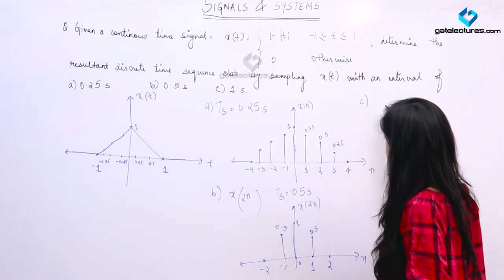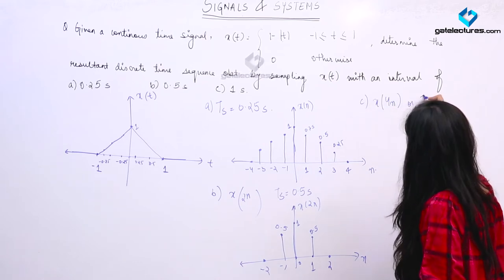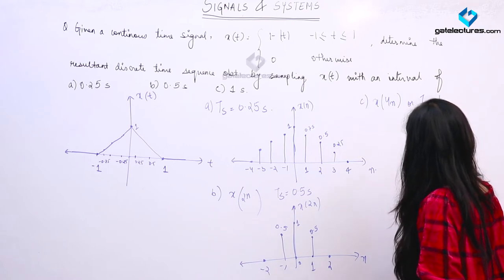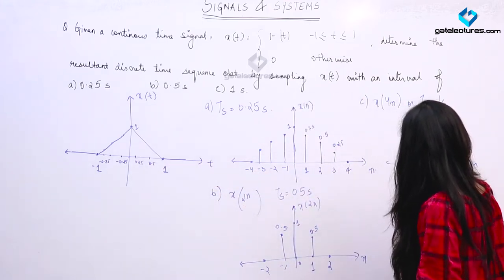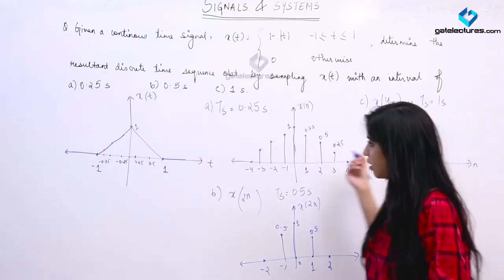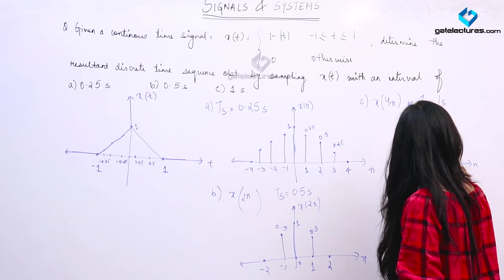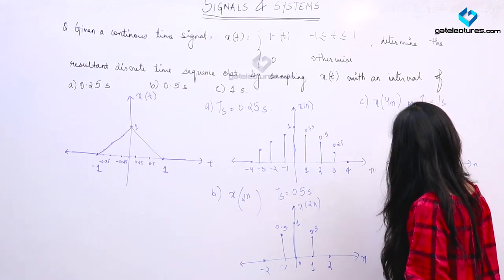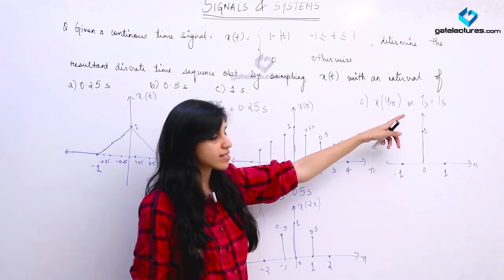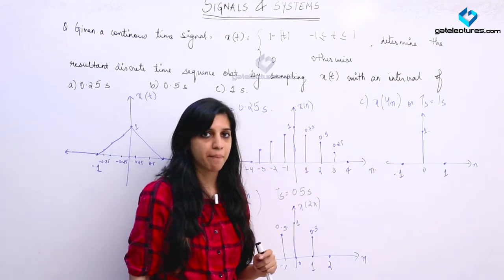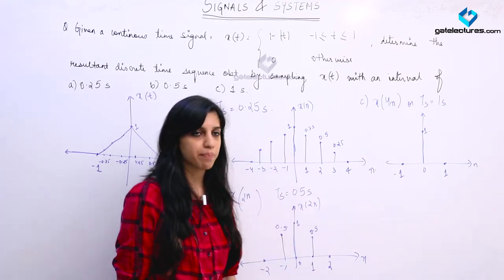For the last option, with a sampling interval of 1 second: first sample at t = 0 has value 1. The next sample occurs at n = 1 (t = 1 second) with value 0, and at n = -1 with value 0. So we are only having a single meaningful sample. Since the sampling interval has increased, reconstruction of the signal using this single sample is of course very tough.